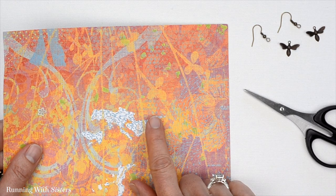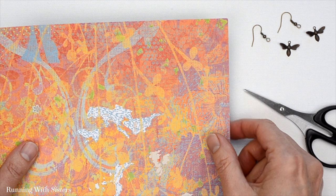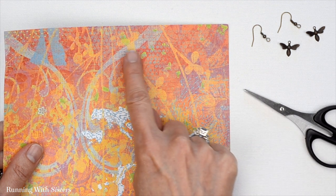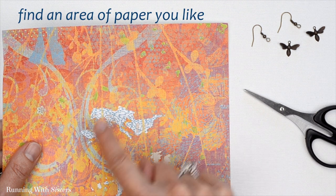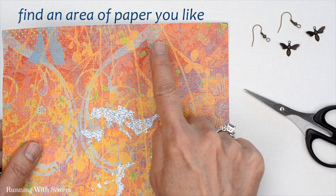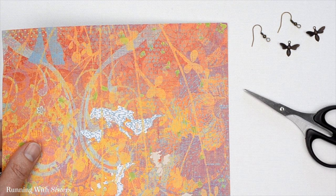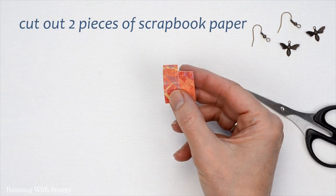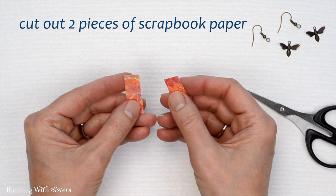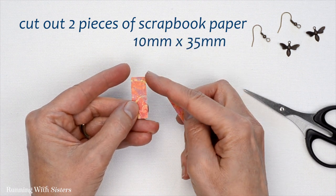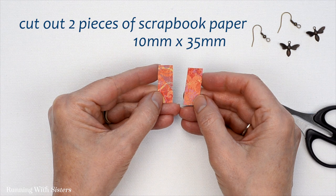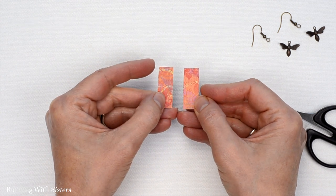To make the earrings, we started by taking our really pretty piece of scrapbook paper and looked around at the paper to find an area that we really liked the look of. We ended up selecting this section that's sort of red and cut out two pieces of the paper. These are 10 millimeters across by 35 millimeters long, and that'll just make a nice long earring.